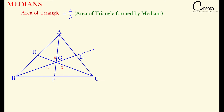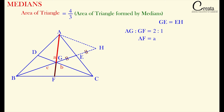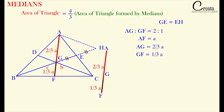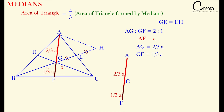Let's extend the line BE to the point H such that GE is equal to EH. GE and EH are both equal. Let's join A and H. We have just studied that the centroid divides the median in the ratio 2 is to 1. So we can say the ratio of AG to GF is 2 is to 1. If the complete AF is equal to A, we can say AG is equal to 2 by 3 A, and GF is equal to 1 by 3 A. We have divided this complete line segment of length A into two parts in ratio 2 is to 1, so the first part is 2 by 3 and the second part is 1 by 3.